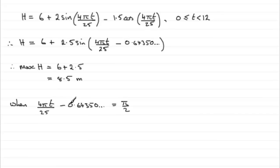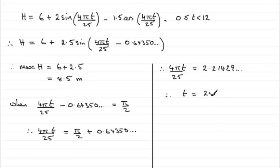All we've got to do now is just add this value to the pi upon 2 and therefore 4 pi t over 25 equals pi upon 2 plus 0.64350 and so on. What we've got then is that 4 pi t over 25 equals 2.21429 and so on. Just rearrange this to get t, just times both sides by 25, and then divide by 4 pi.